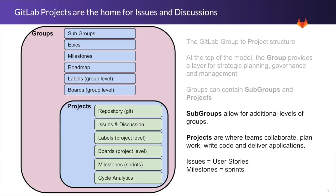A project resides within a group or subgroup layer. Inside a project, you have your Git repository. Issues and discussion happen at the project level. Labels are built into the project, so a team can use their own naming conventions and build out their own boards. You can create milestones associated with a sprint or release with start and end dates, and there's cycle analytics that gives you insight on that project.